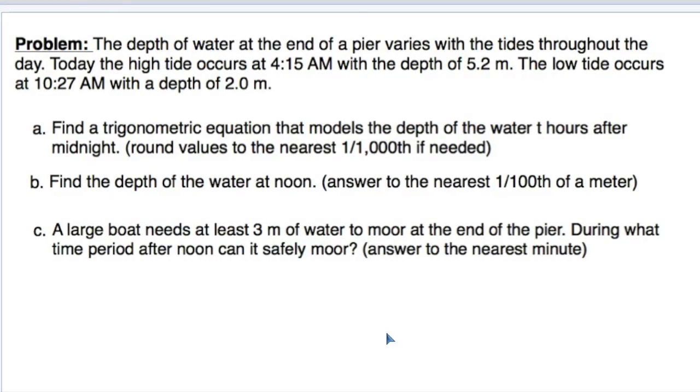We are going to look at what I'm going to call a classic tide problem today. So what we have is water at the end of a pier subject to the tides. Today at 4:15 AM, you have a high tide of 5.2 meters and you have a low tide at 10:27 of 2 meters.